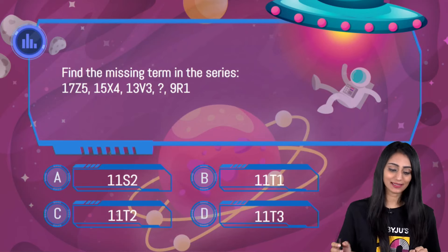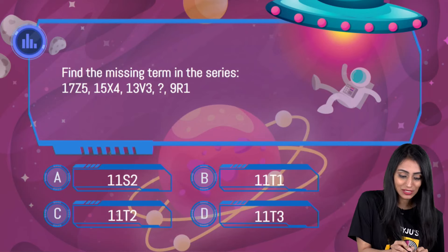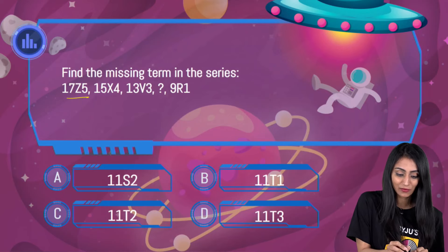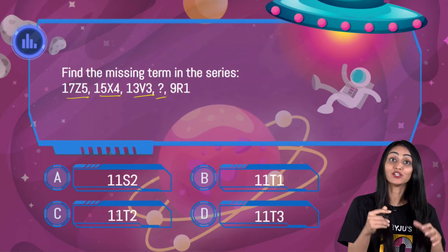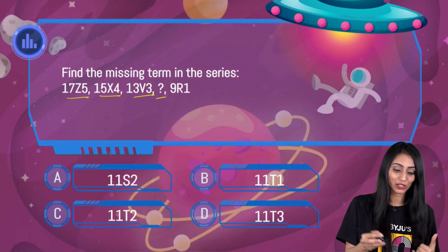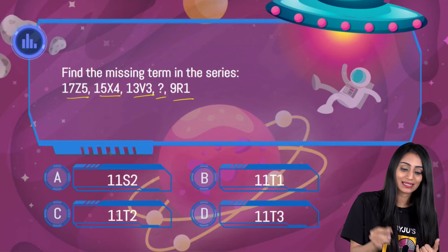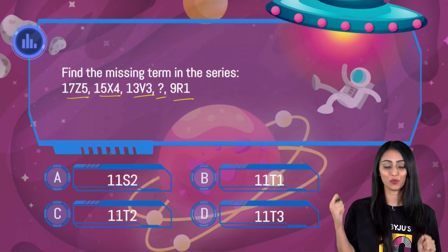Find the missing term in the series: 17Z5, 15X4, 13V3, and then your missing term that you have to find out, then 9R1.